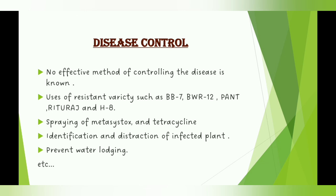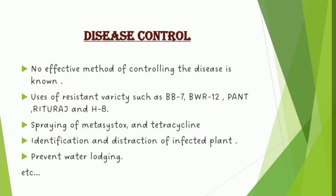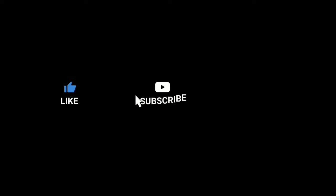Disease control — actually no effective method of controlling the disease is known. Control measures include: use of resistant varieties such as BB-7, BWR-12, Pant Rituraj, and H-8; spraying of metacystox and tetracycline; identification and destruction of infected plants; and prevention of waterlogging. Thank you, stay tuned.